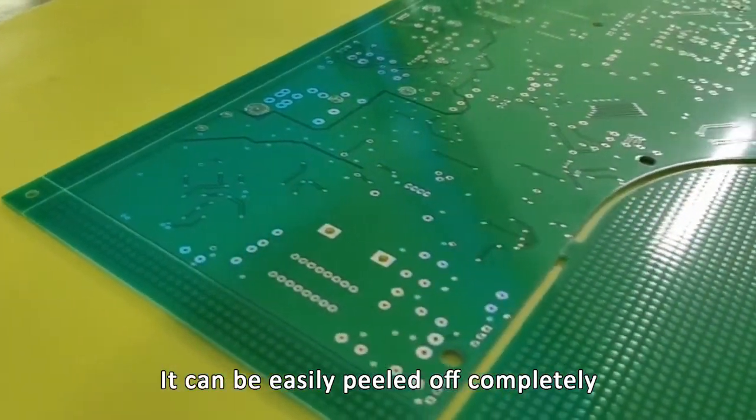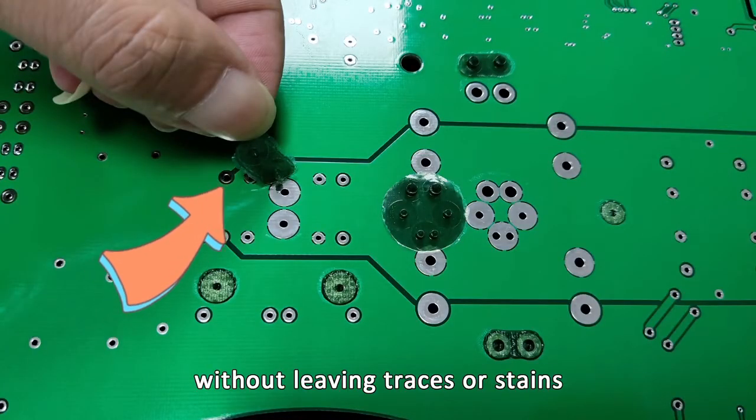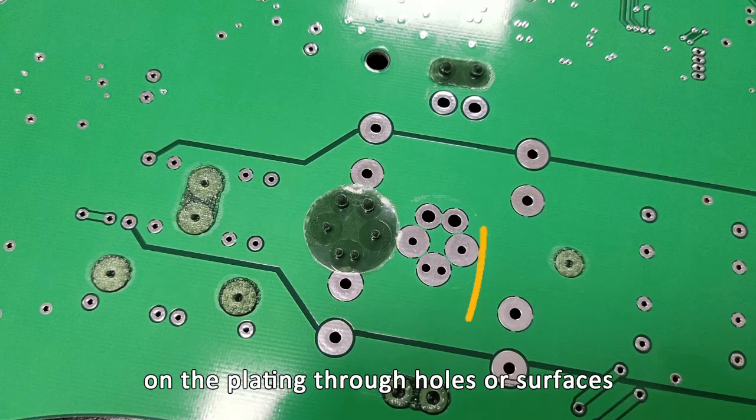It can be easily peeled off completely from the board after the specified electroplating or tinning process is complete, without leaving traces or stains on the plating, through holes, or surfaces.